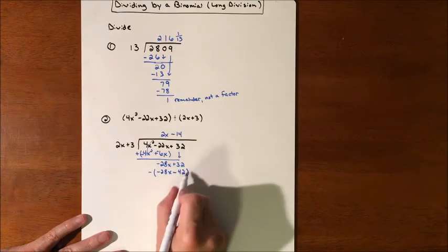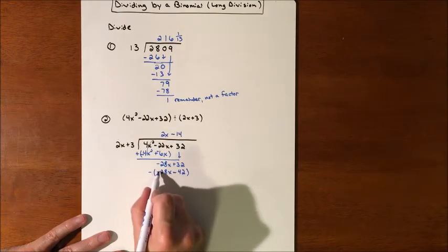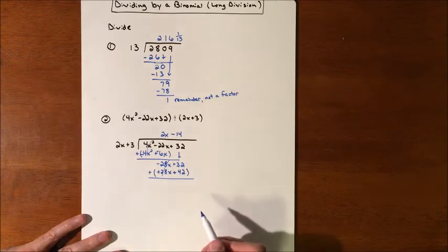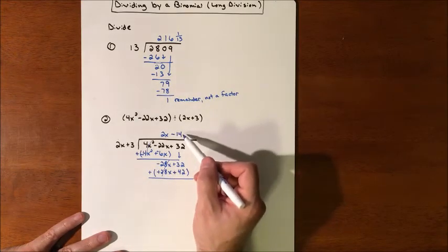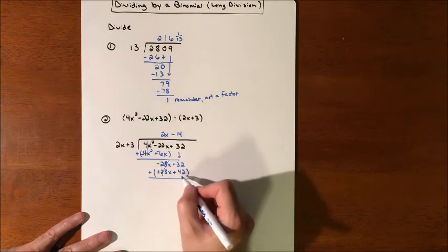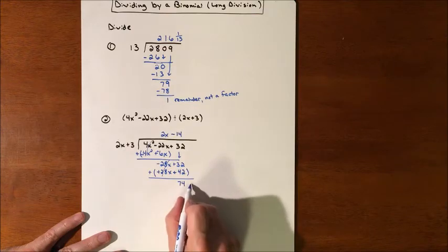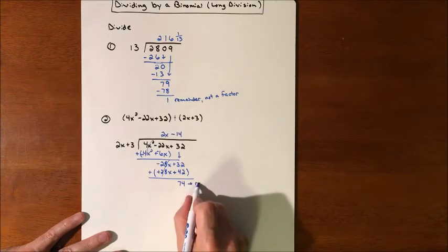For our polynomial, our binomial, it's going to distribute and change both of their signs. And every time, it should cancel out the first term. If it doesn't, you didn't pick the right value. So here, this adds up to 74. We have run out of values, so that is our remainder.